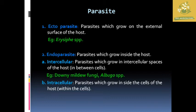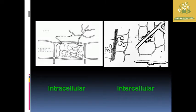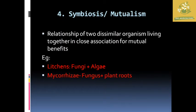Intracellular parasites penetrate into the cells of the host plant and grow, reproduce, and function within those cells. Intercellular parasites, by contrast, grow, reproduce, and emerge in the gaps between the cells of the host plant.